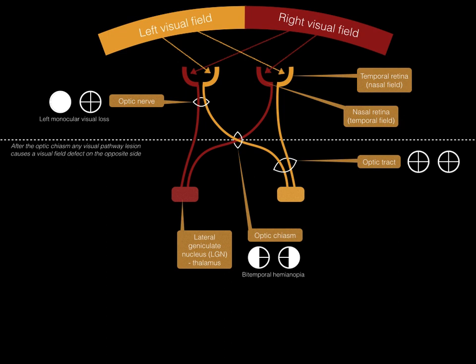What visual field defect would you expect with a lesion affecting the right optic tract? A left homonymous hemianopia. It is left because of the opposite concept just mentioned, homonymous because the same side of each eye experiences a visual field defect, and hemianopia because only half of each eye's retinal fibres will be affected.